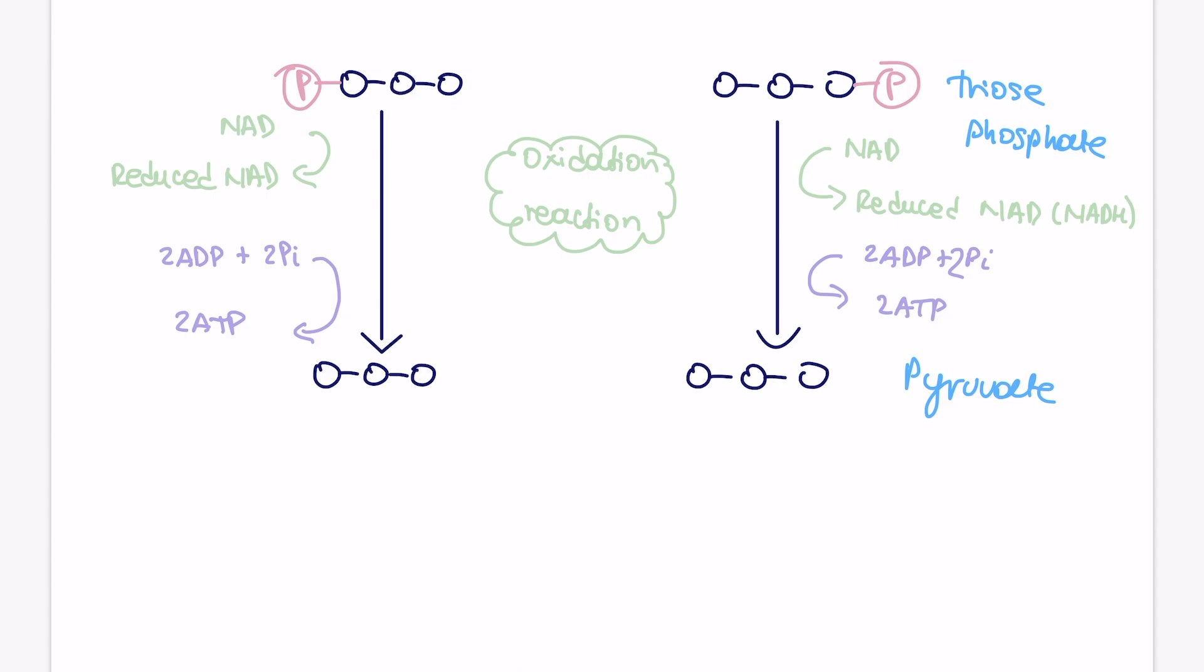You might be then asked, what are the net products of glycolysis reactions? So let's just kind of review this. So per one glucose molecule that we started with, we're going to produce four ATP molecules in the glycolysis reaction. However, we also use two ATP molecules to phosphorylate the initial glucose. So therefore, we're going to produce two ATP molecules. We're then going to produce two reduced NAD molecules. And we're going to produce two pyruvate molecules.